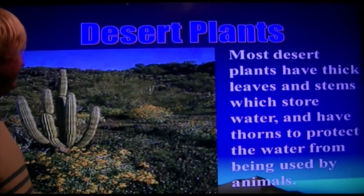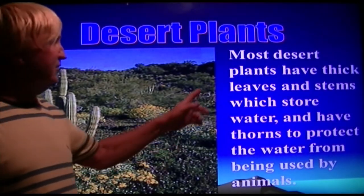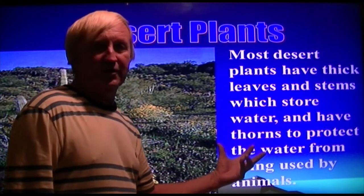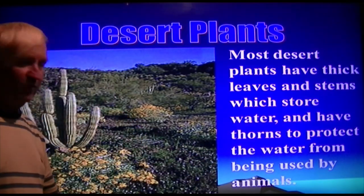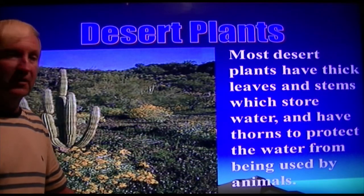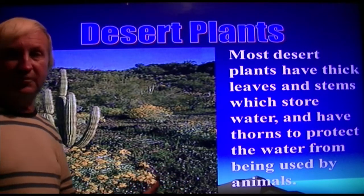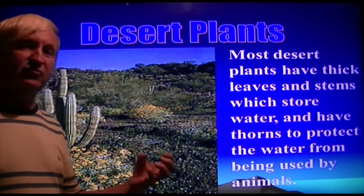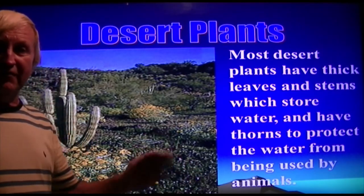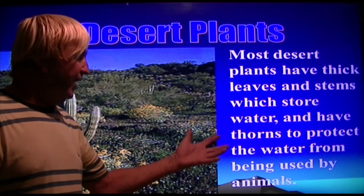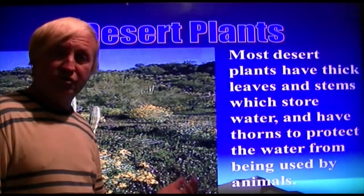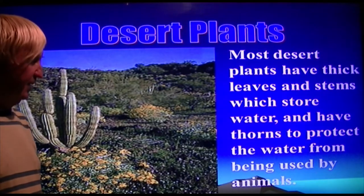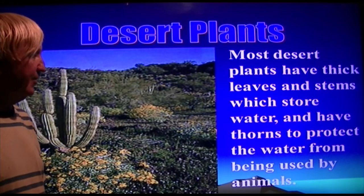Desert plants. Most desert plants have very thick leaves and stems, and they basically have thorns. The primary reason is protection — to keep animals from consuming them. By having thorns and very thick structures instead of thin leaves, they have a defense from being consumed by herbivores.